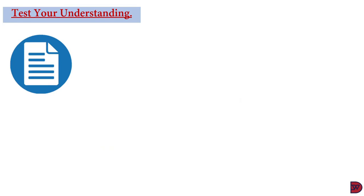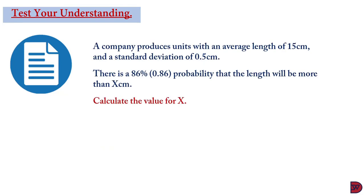Let's test our understanding again. A company produces units with an average length of 15 cm and a standard deviation of 0.5. There is an 86% probability that the length will be more than x. We are supposed to calculate x — so now we are working backwards.